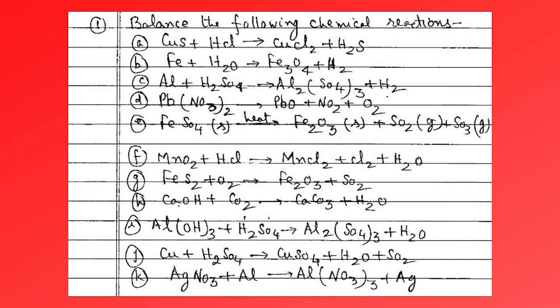Al2O3 plus H2SO4 → Al2(SO4)3 plus H2O; then CO plus H2SO4 → CoSO4 plus H2O plus SO2; then silver nitrate plus aluminium → aluminium nitrate plus silver.